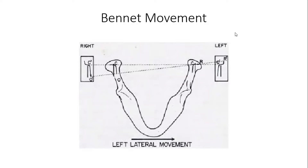Hello everyone. In today's lecture we will understand the immediate and progressive side shift. Suppose this is our mandible and the mandible is moving in the left lateral movement. So the left condyle will be the rotating condyle. Our right condyle will be the non-working condyle and it will be the orbiting condyle, which will orbit around the rotating condyle.